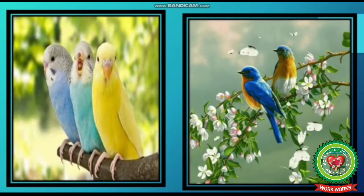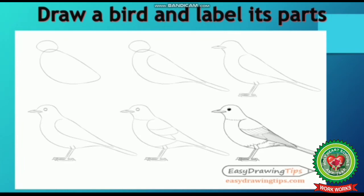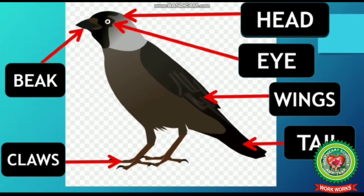Now look at this picture and follow these steps to draw a bird. After drawing, you will be able to label the parts of the bird's body: head, eye, beak, wings, tail, and claws. Students, now draw the bird's body with its parts on your copy.